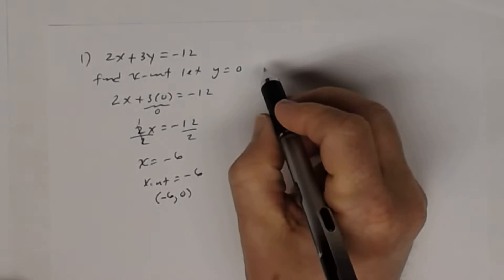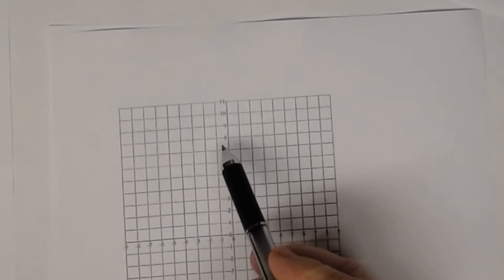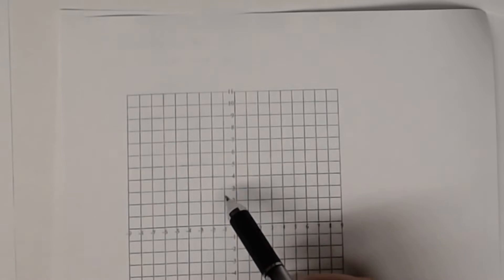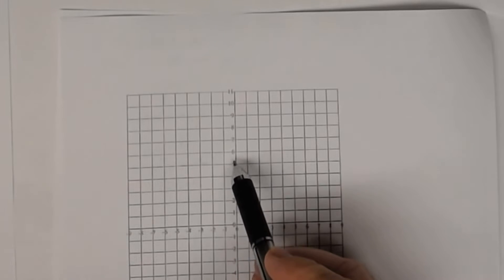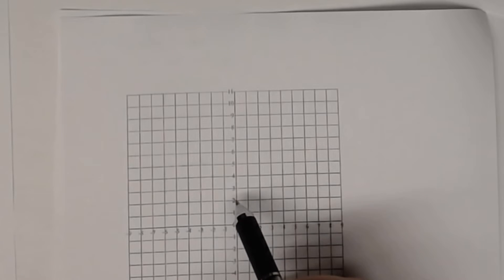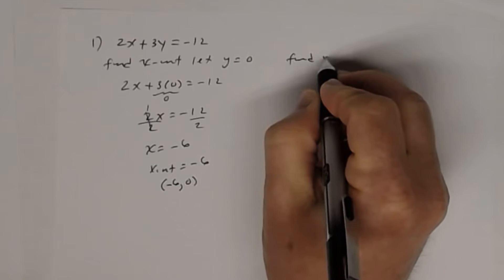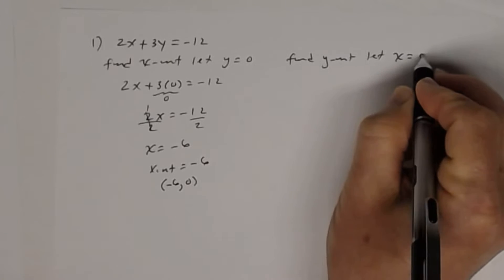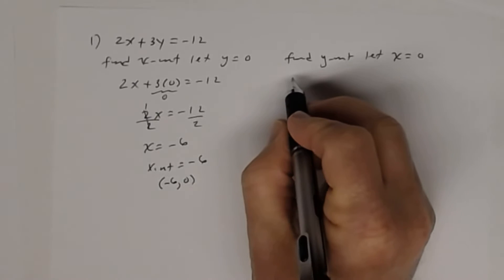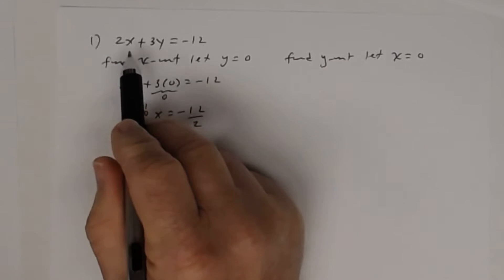So then we're going to find the y-intercept. The y-intercept is where the graph crosses the y-axis. Wherever the graph crosses the y-axis, if you look at any point on that y-axis, the x-coordinate is 0. So to find the y-intercept, you're going to let the variable x equal 0, and substitute 0 in place of x in the equation.